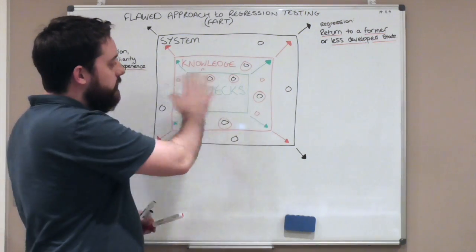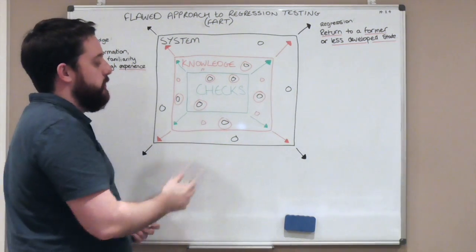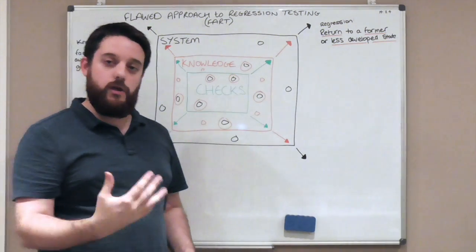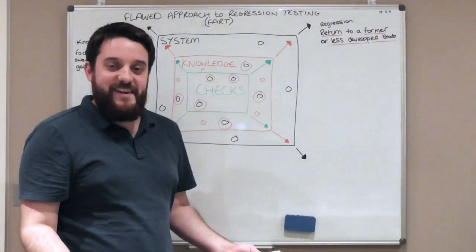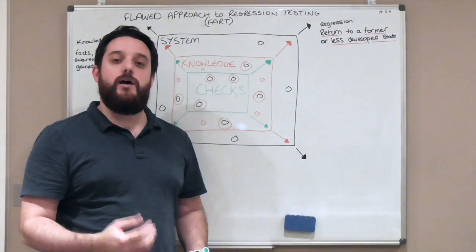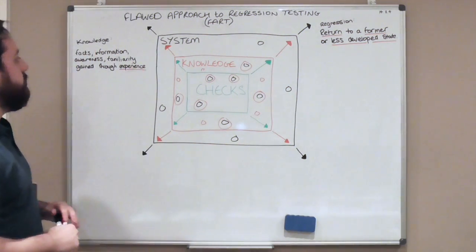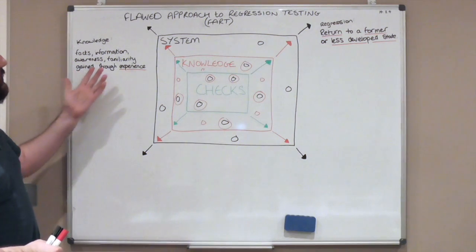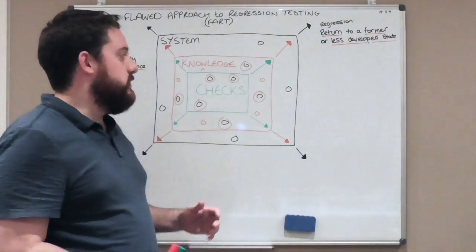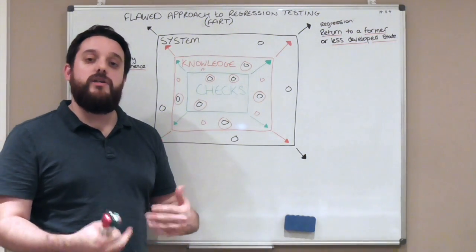This is why I'm trying to explain that I think it's a flawed approach. The fact that there's lots of change going on means that you have to continuously change these. If you're spending all your time trying to make your automation the same as your knowledge, trying to codify all your knowledge, when are you going to gain any new knowledge? We test because we need to gain knowledge, we need to gain information to help our business, to help our stakeholders.